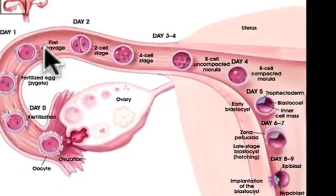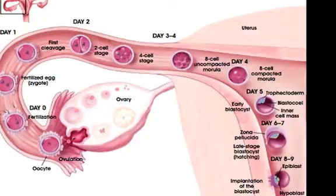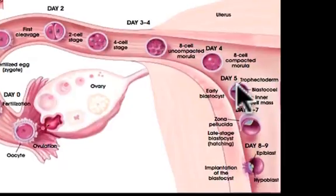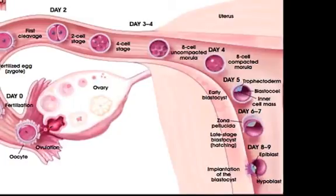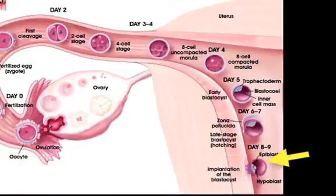After fertilization, it takes about two days for mitosis to begin — the cleavage of the egg. Each time mitosis occurs, the number of cells doubles but the overall mass does not increase; the cells get smaller. By the time the egg reaches the uterus, there's a ball of cells called a blastocyst with an inner cell mass that will eventually become the embryo. That blastocyst will then embed itself into the endometrial lining, and cells of the placenta will start to develop.